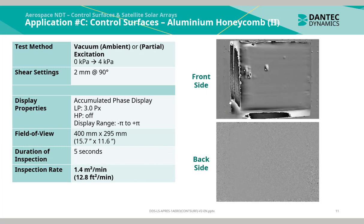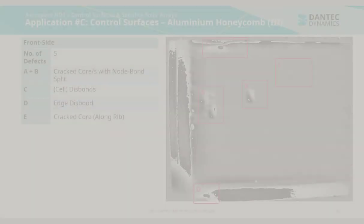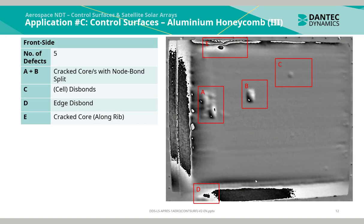This is a video recording of the measurement from the front side and on the back side. On the front side of the panel there were 5 indications. A and B were indications of cracked cores with no bond splits. Indication C was a cell disbond. Indication D was an edge disbond, and E was a crack core along the rib.